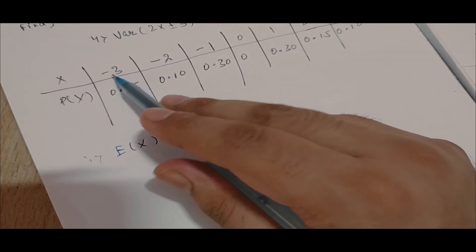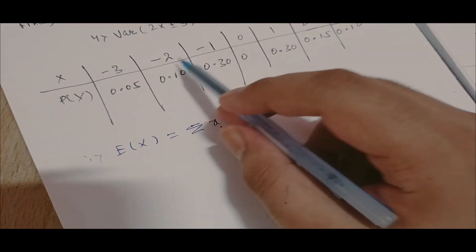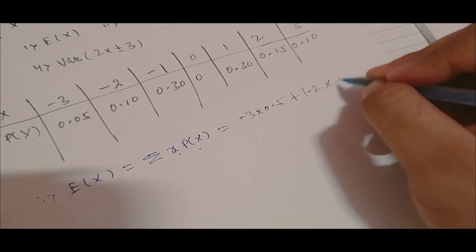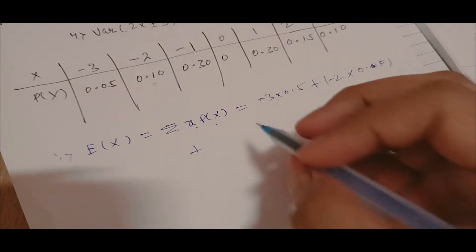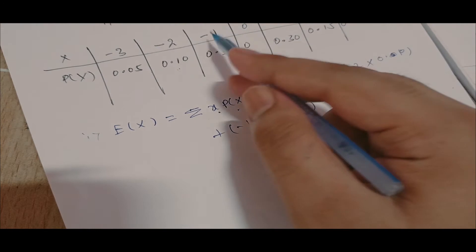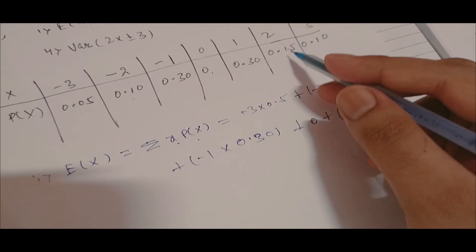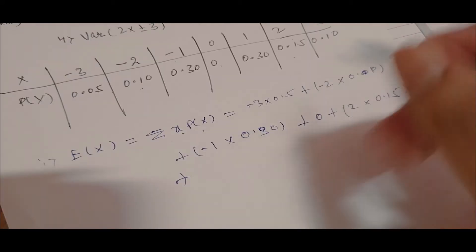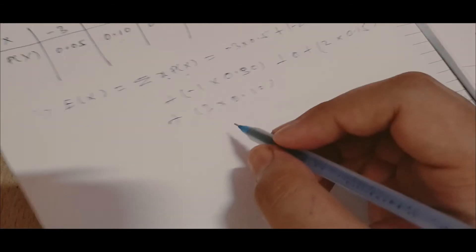So E(X) = (-3)(0.05) + (-2)(0.01) + (-1)(0.30) + (0)(0) + (2)(0.15) + (3)(0.10), summing over all values of x.